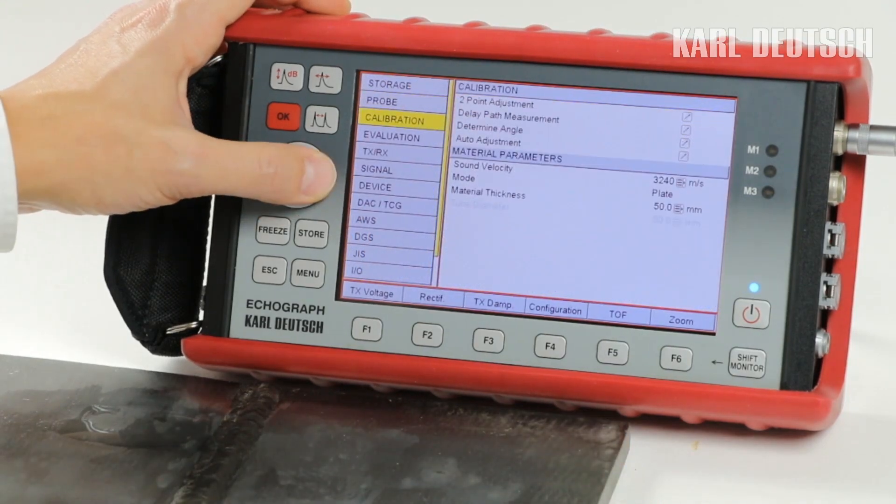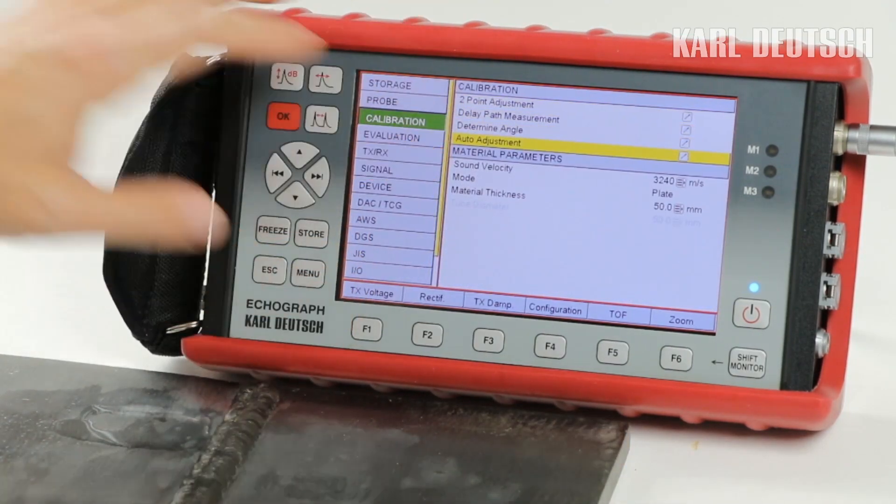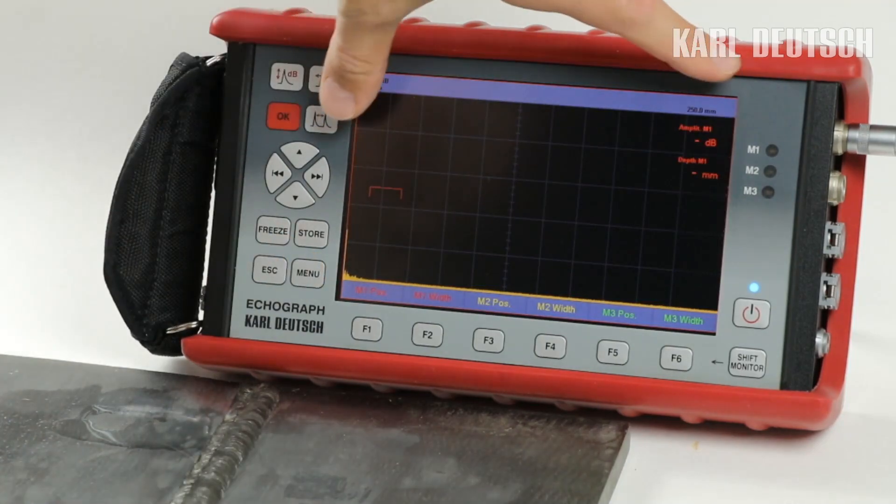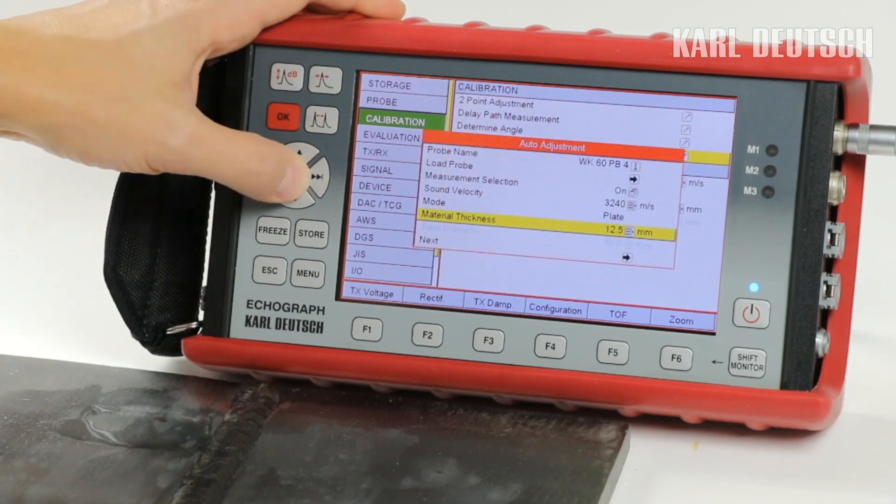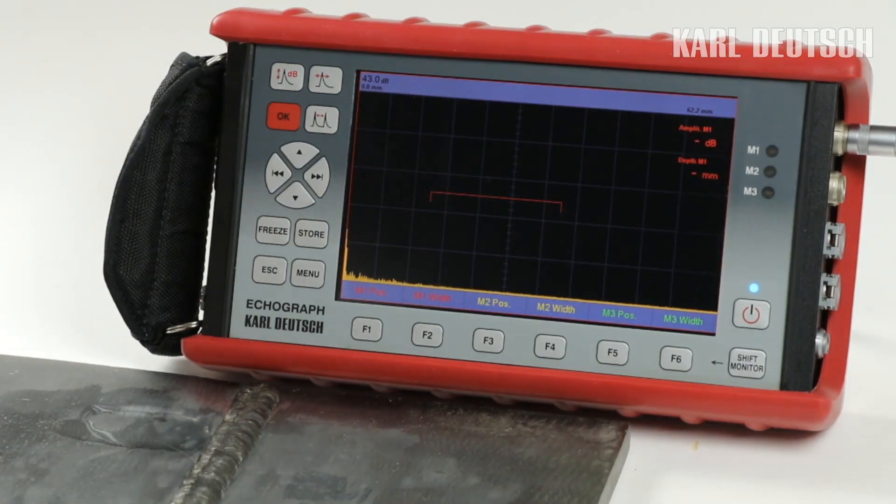Several wizards are available for the adjustment of the probe and material. The best way to quickly adjust the displayed area of the A-scan is to use the auto-adjustment wizard. The range is set automatically.